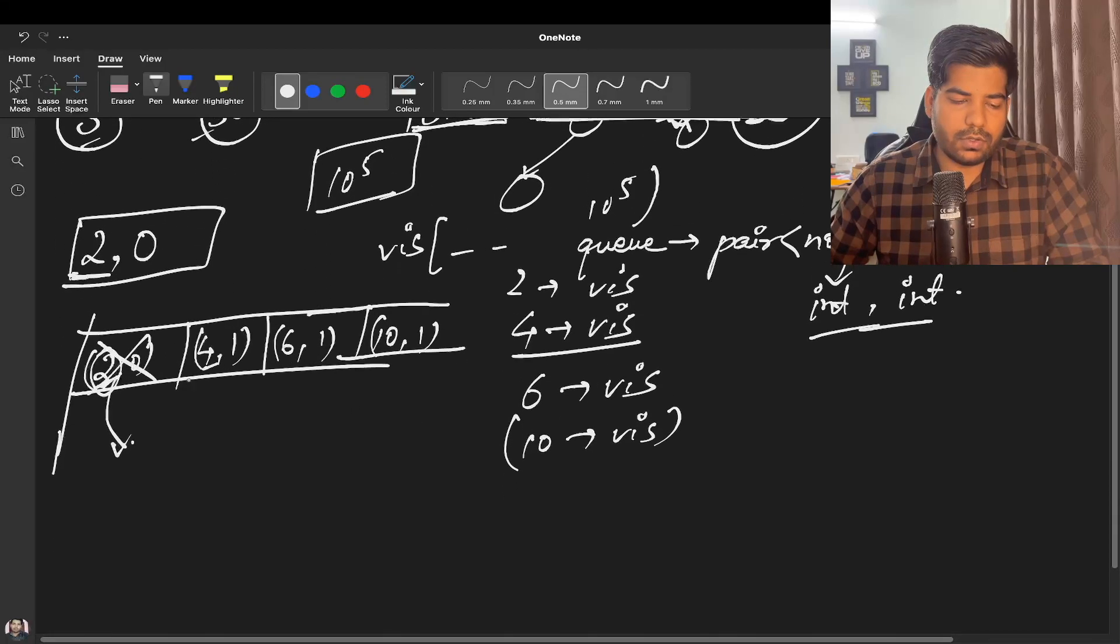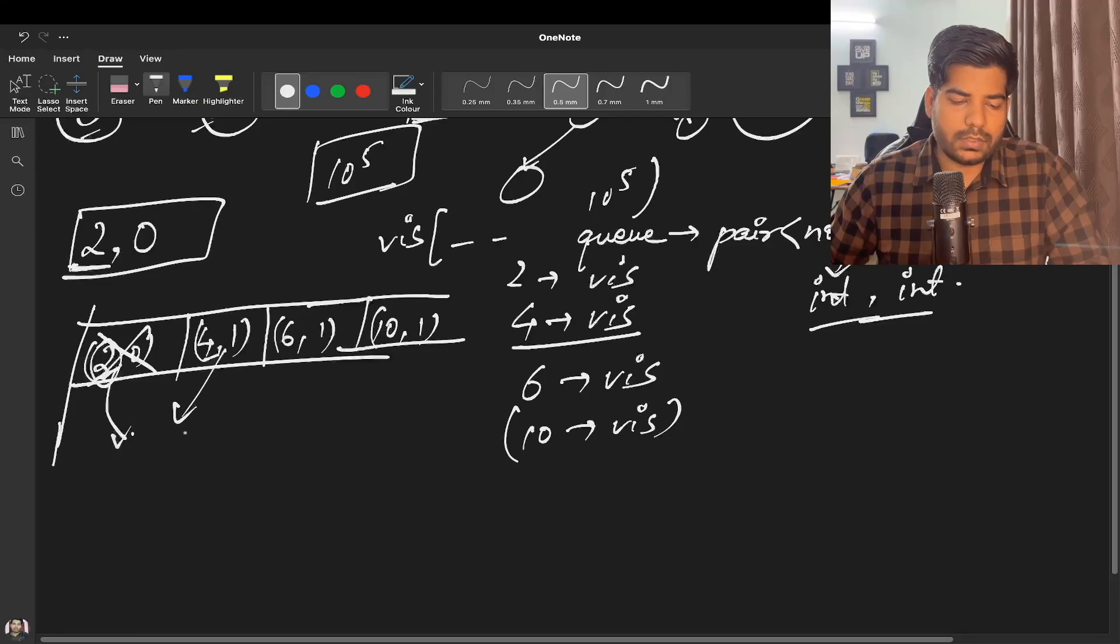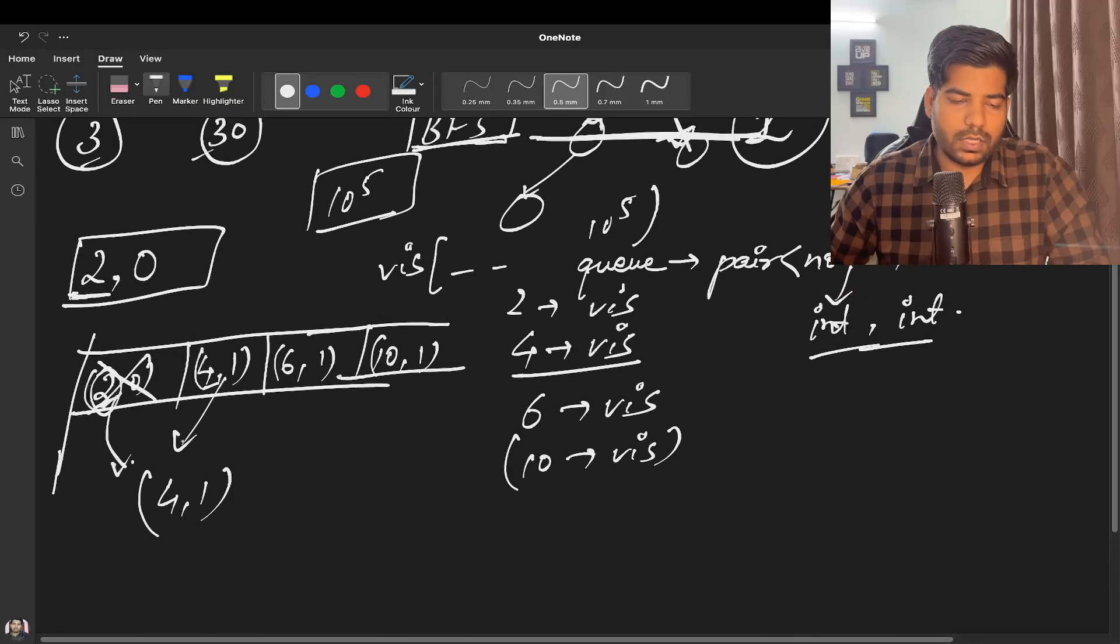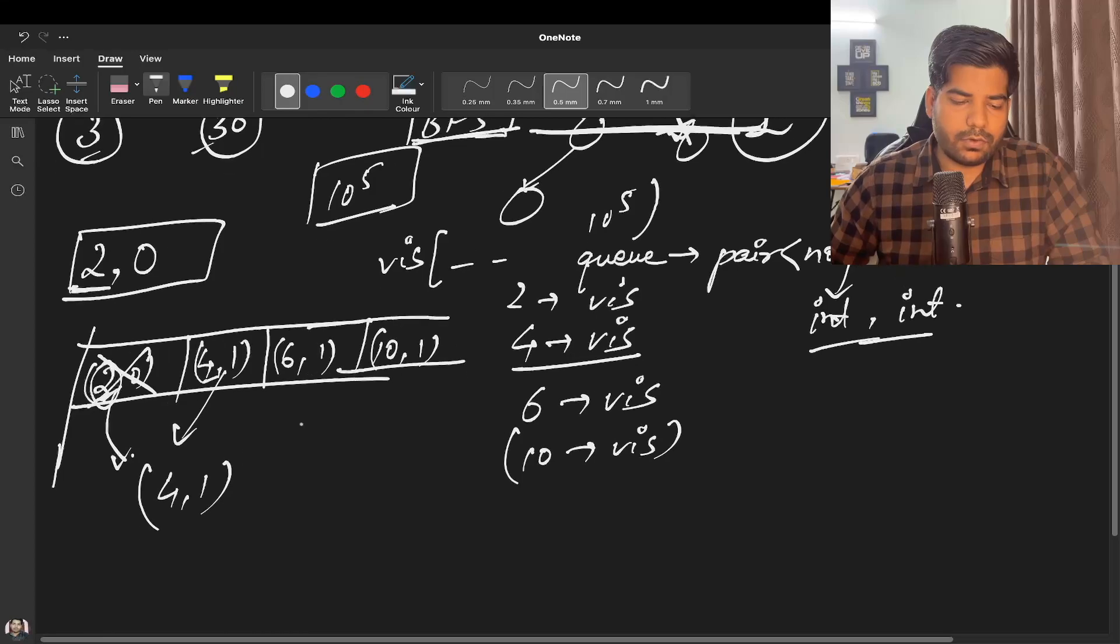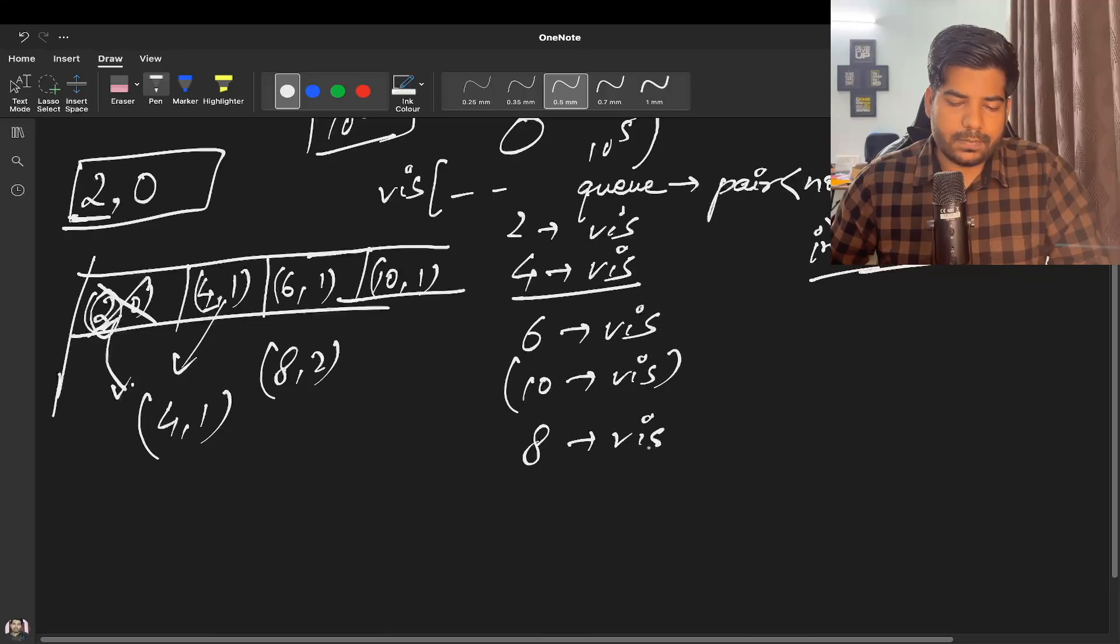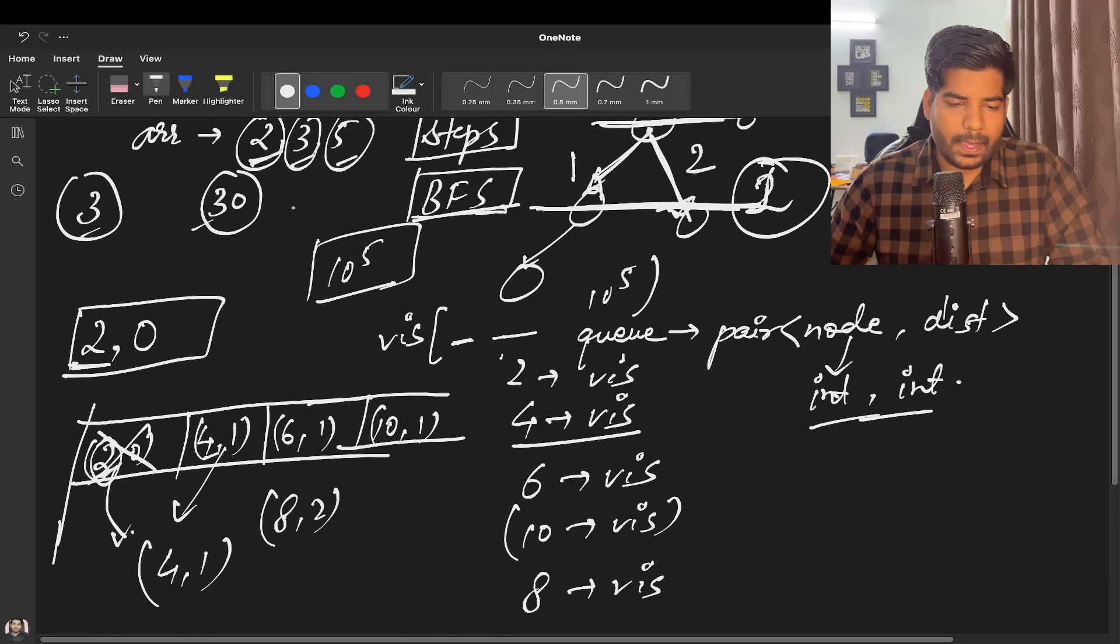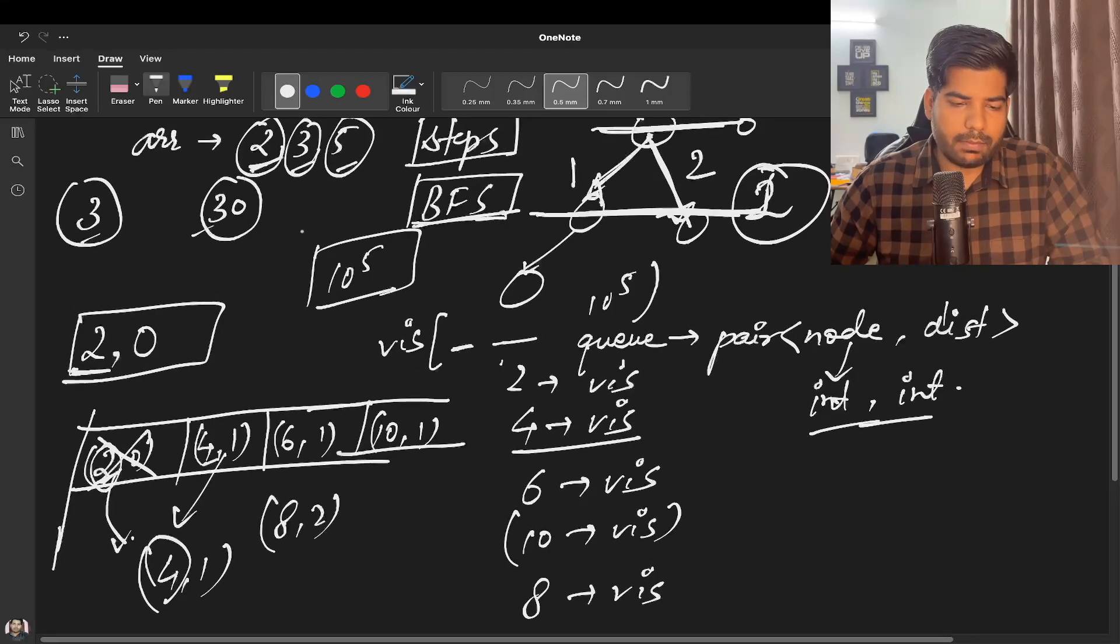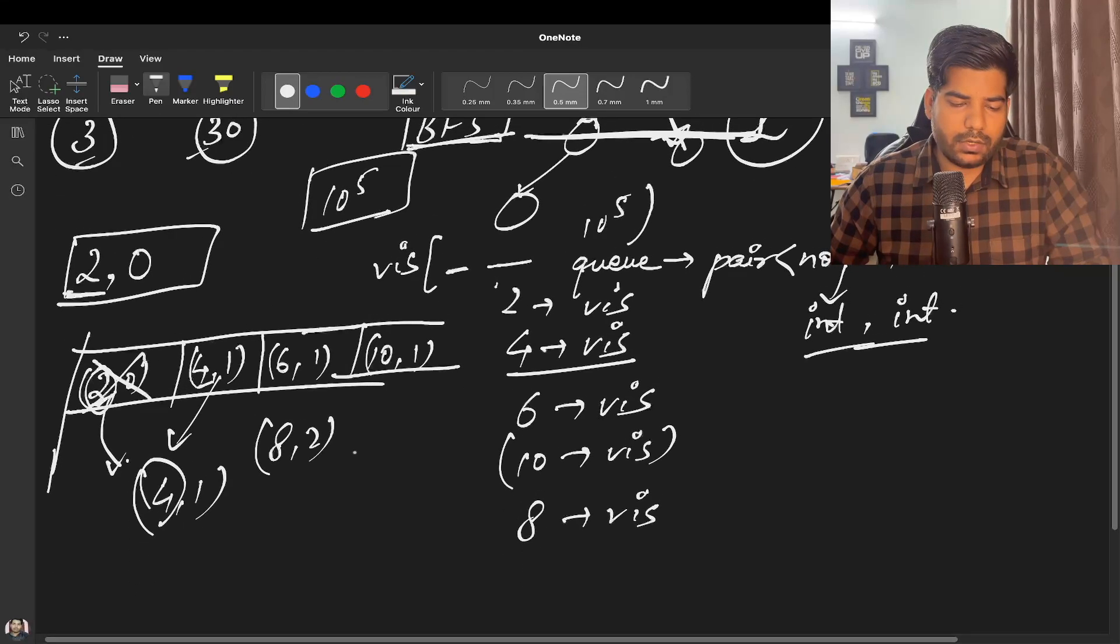Now we go to 3, we multiply 2 with 3, we get 6 with step 1. 6 is also marked as visited. Now we multiply 2 with 5, so 2 into 5 is 10 with step 1. So 10 is also visited. Next time you go to this queue, you take 4, 1 out of this queue. We again do multiplication, 4 to 8. This 8 will take two steps and we will mark 8 as visited.